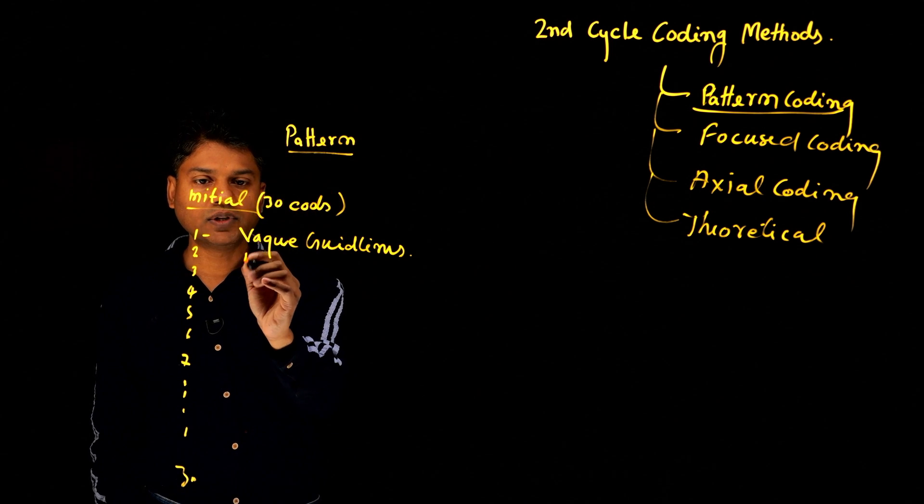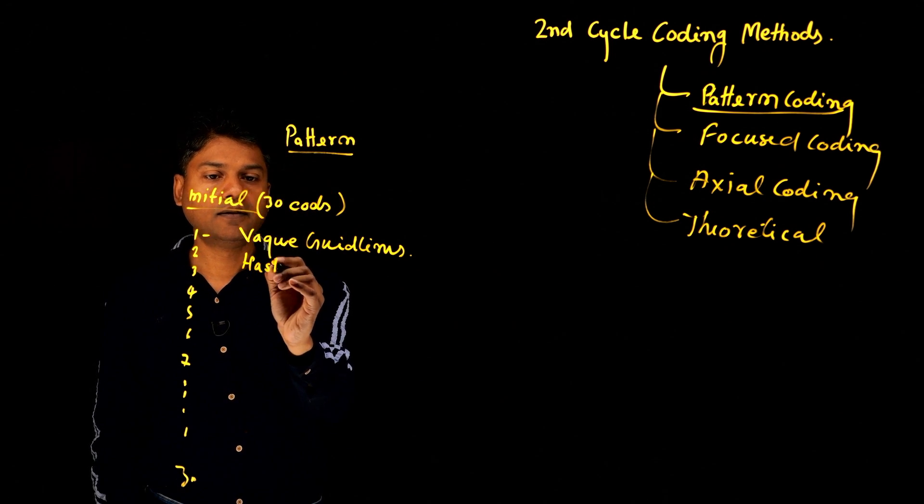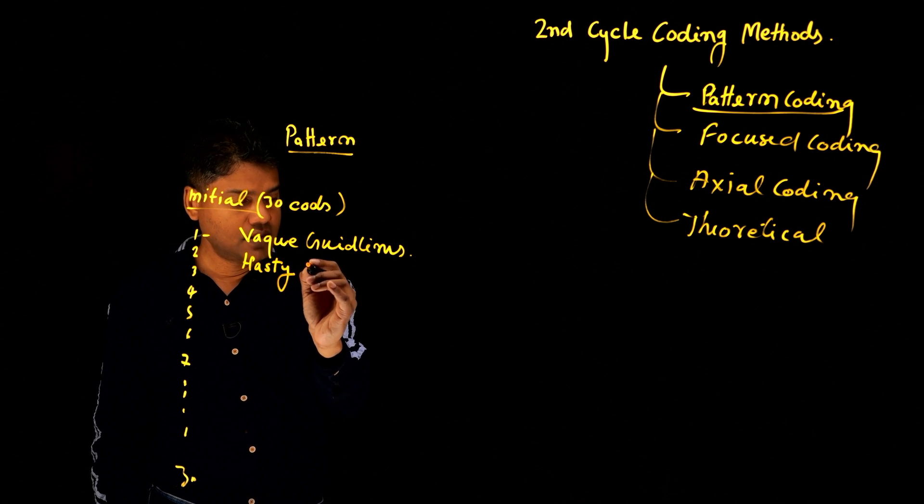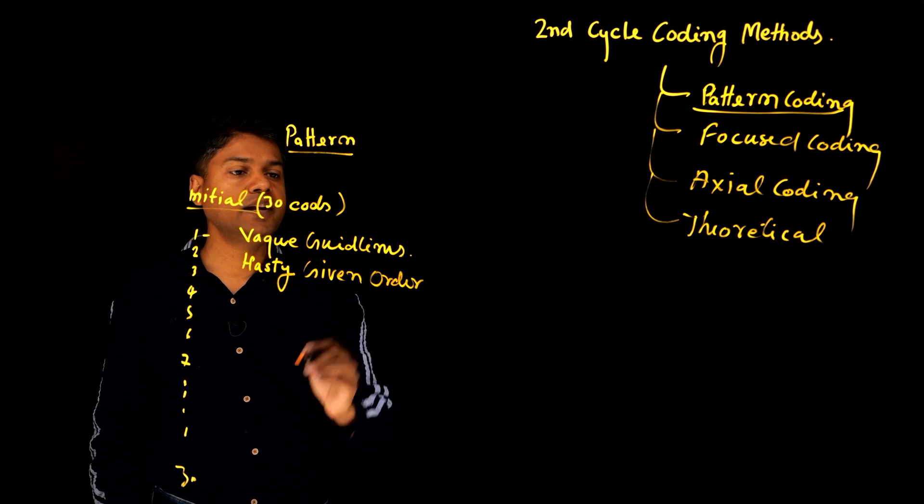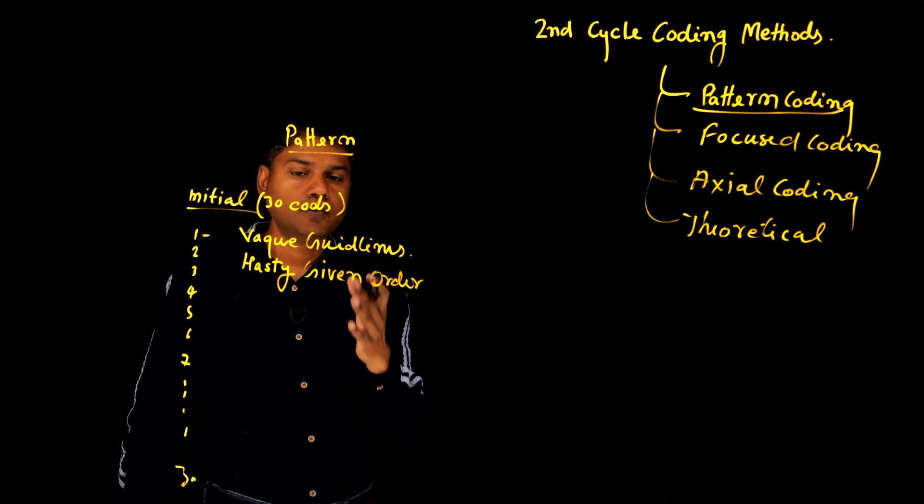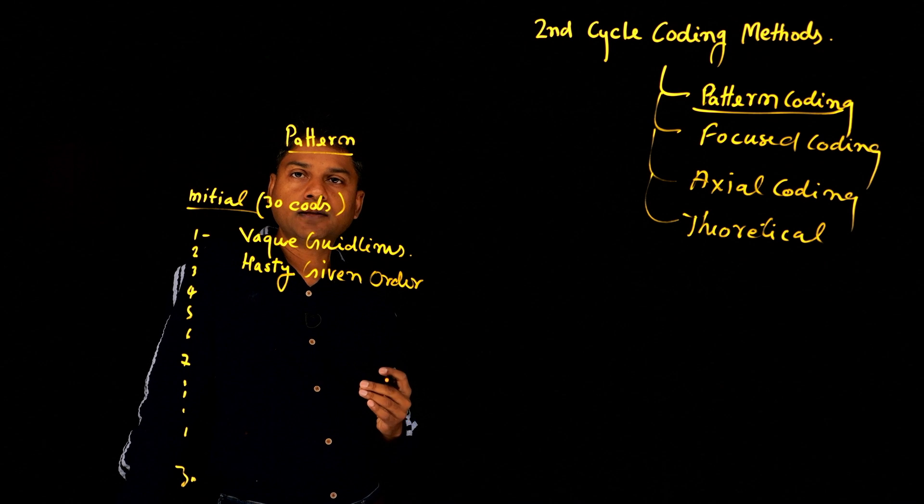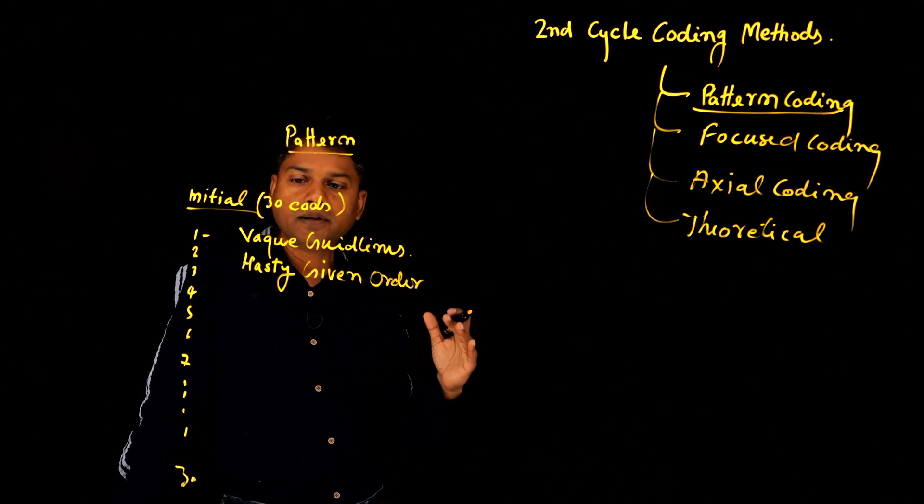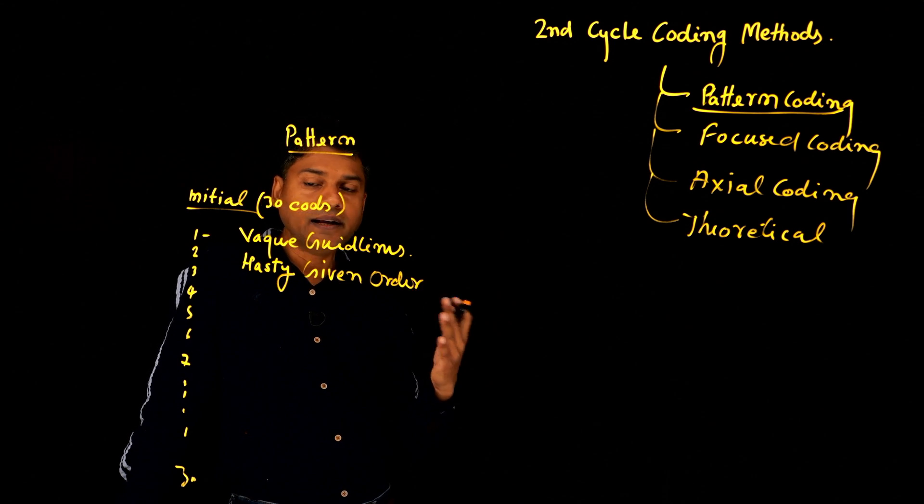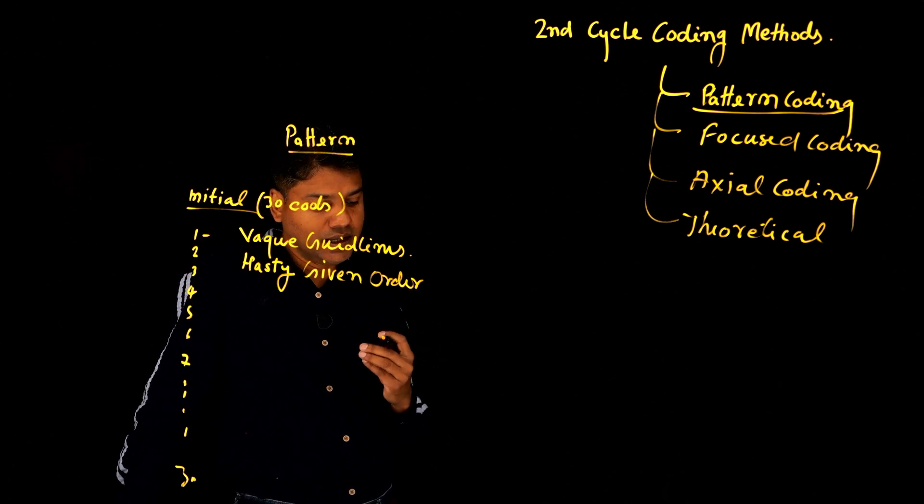And there is another code, let's say hasty given orders. This is another initial code, which talks about that sometimes the communication, the order which happens, which is given, it's more like not planned in advance, they are more hasty in nature.